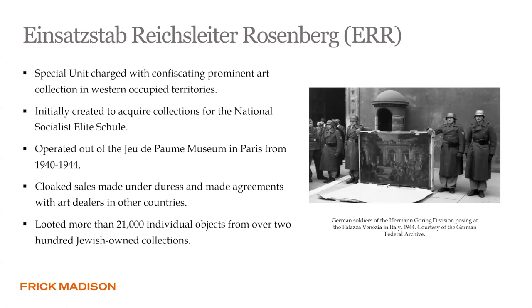The Einsatzstab Reichsleiter Rosenberg, or ERR, was the special Nazi unit charged with confiscating prominent Jewish collections in Nazi-occupied territories, including France, Poland, the Baltic States, Italy, the Soviet Union, and Greece. It was the main agency involved in systematic looting of cultural treasures. Originally established to acquire collections for the National Socialist University — like a curiosity cabinet to show material related to opponents of Nazi ideology — it sought Jewish, Masonic, and communist collections. After the occupation of France, it also began looting heavily from non-Jewish private collections as well.